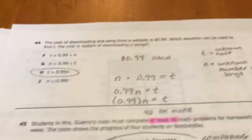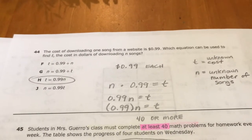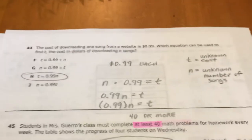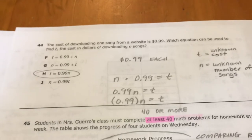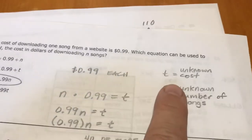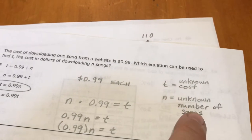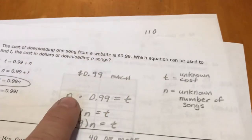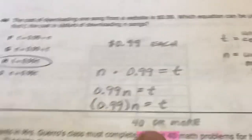All right, number 44 is just an algebraic question. It says the cost of downloading one song is 99 cents. Which equation can be used to find T, the cost in dollars of downloading N songs? So T is an unknown cost that you get by multiplying an unknown number of songs times 99 cents each.